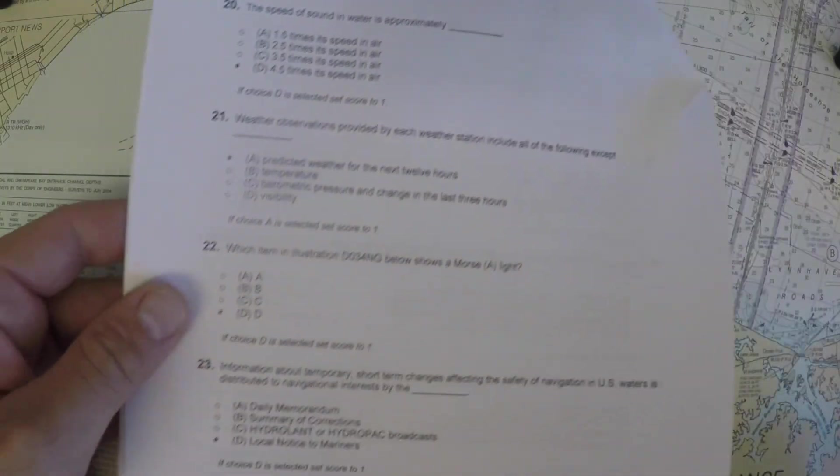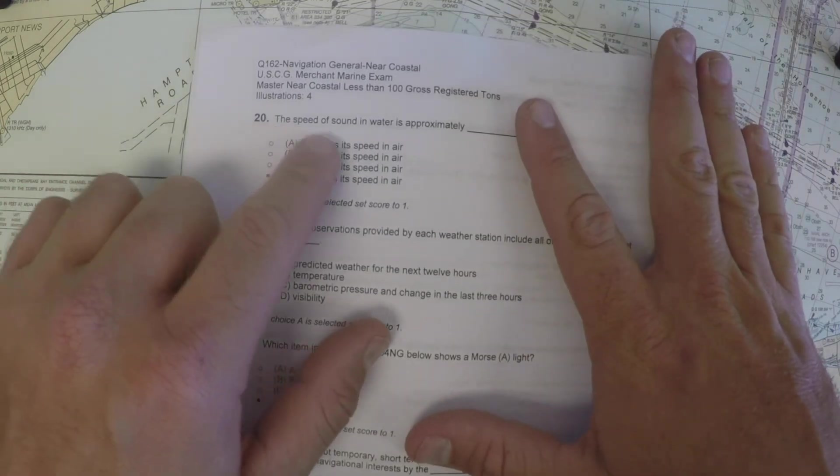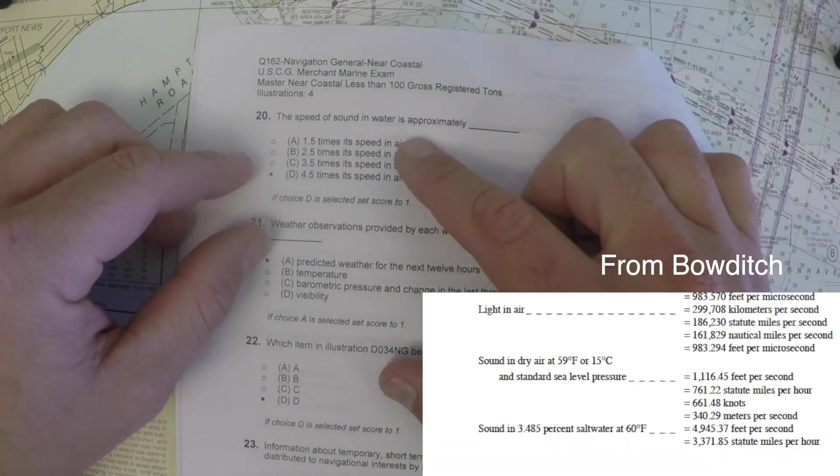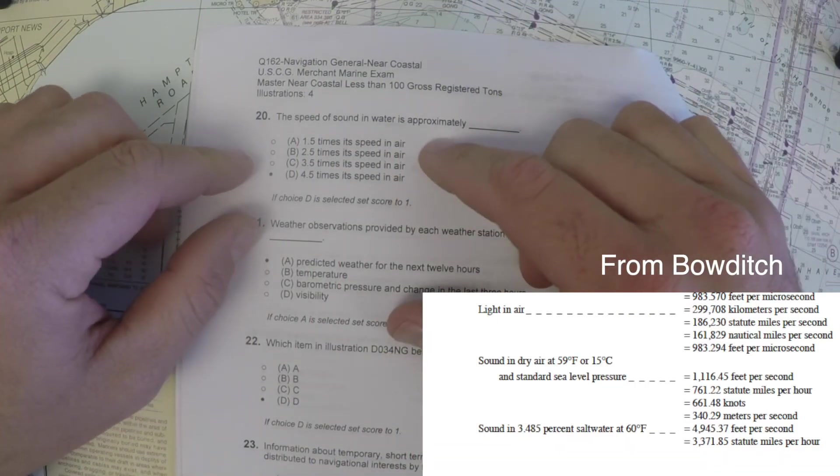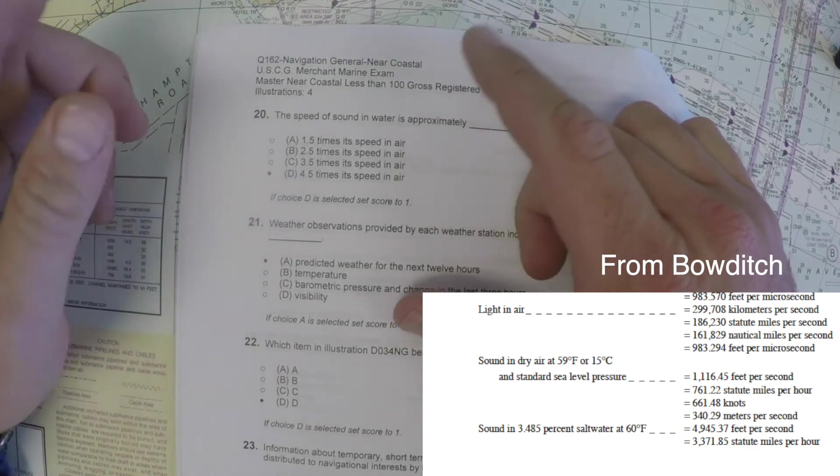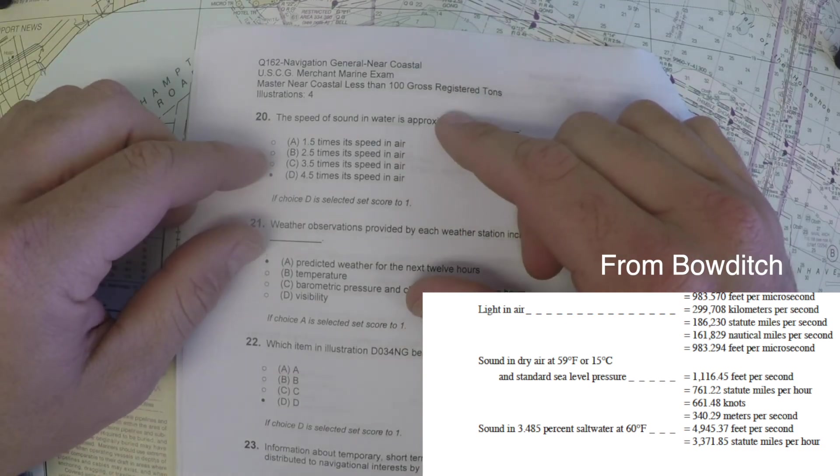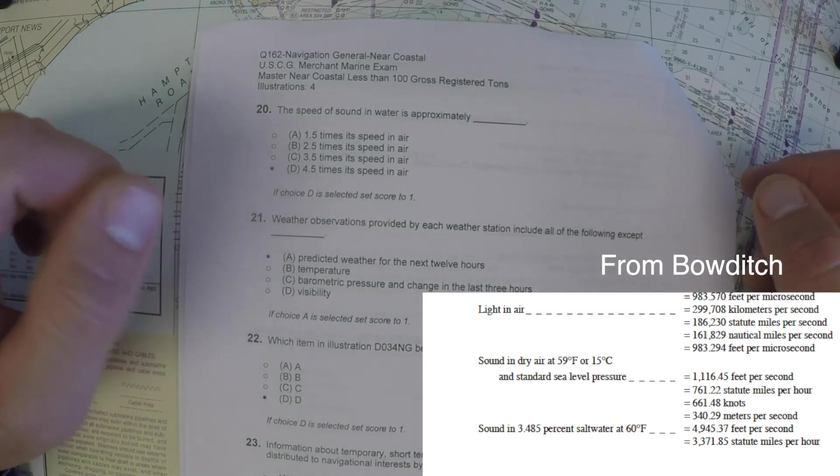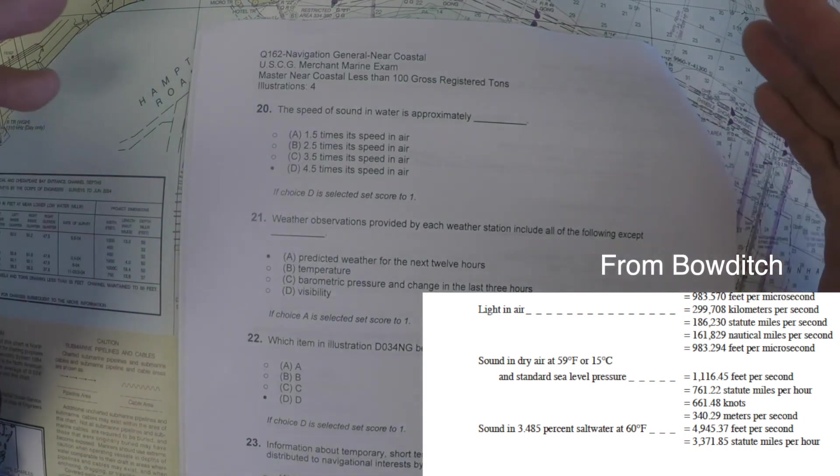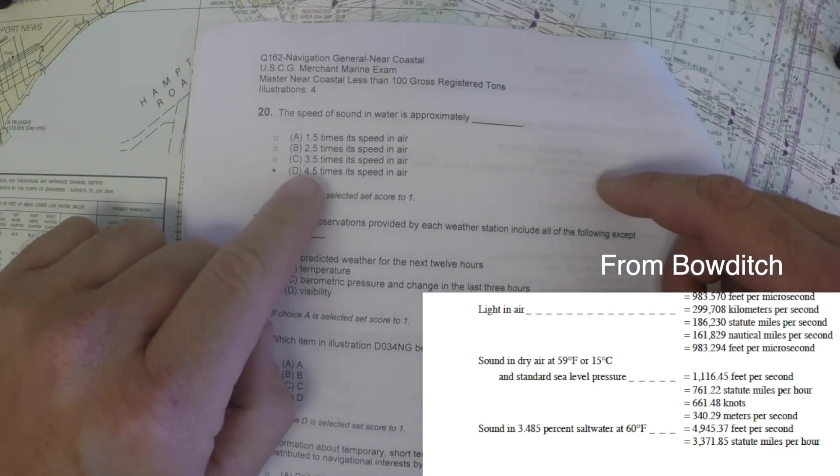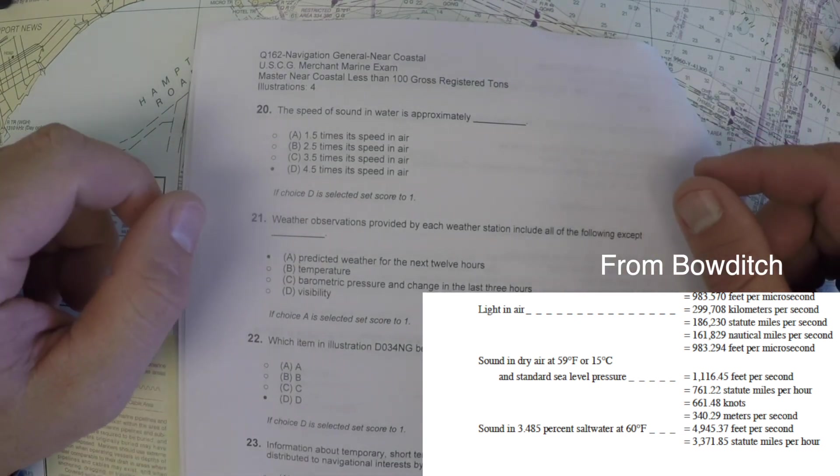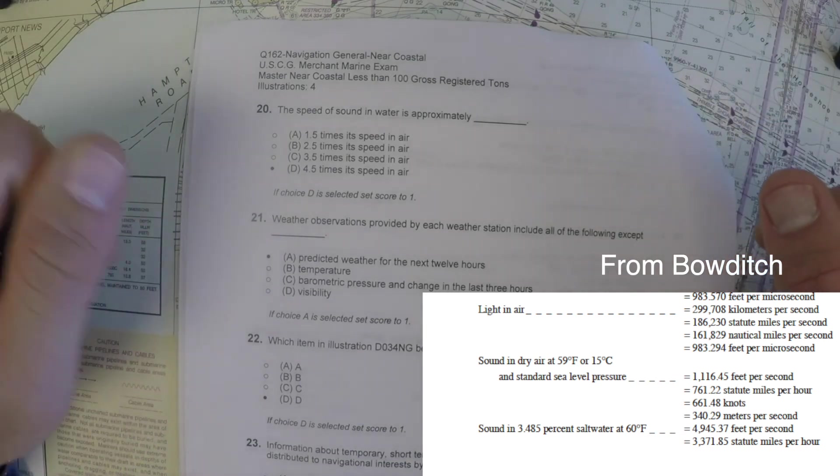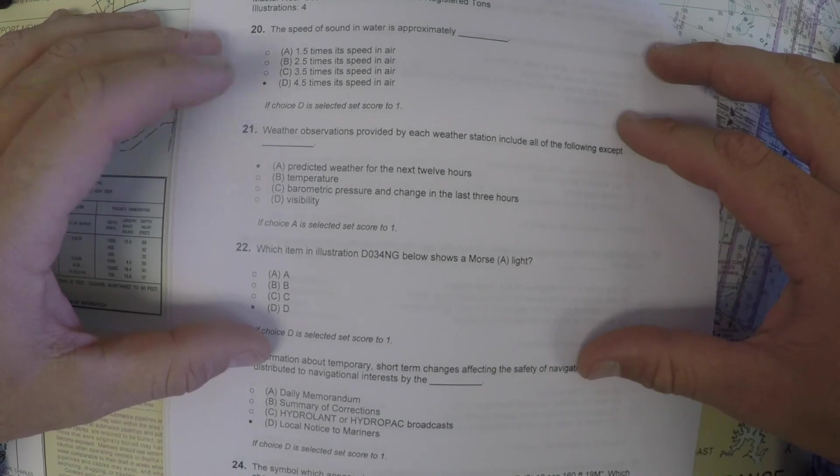All right, moving on. Number 20, the speed of sound in water is approximately what? And it's all having to do with how much quicker it moves than in air. So Bowditch is going to be your friend here. You can see that the speed of sound is listed in air. And then in water, you can see the exact figures, but roughly four and a half times the speed in water is faster than the speed of air. So that's useful for things like depth sounders.